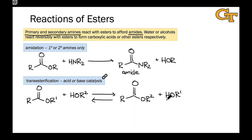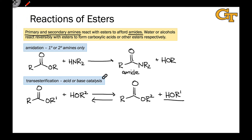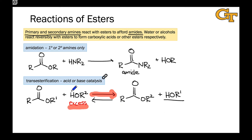If we think about the thermodynamics, HOR1 is in general not especially stable relative to HOR2—they're both alcohols. So in order to drive this process forward, typically what we have to do is use a large excess of the alcohol that we want installed into the ester. This drives the reaction forward through a Le Chatelier's principle type effect—using an excess of a reactant pushes the reaction toward products. The other thing we can do to accelerate this process is use acid or base catalysis, which can actually be done with many nucleophilic acyl substitutions.